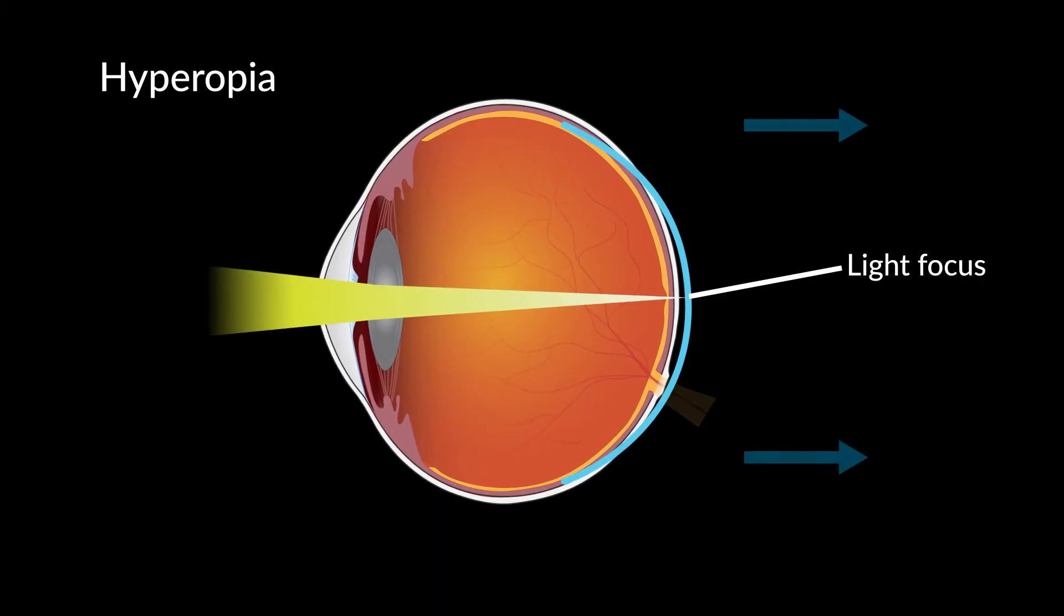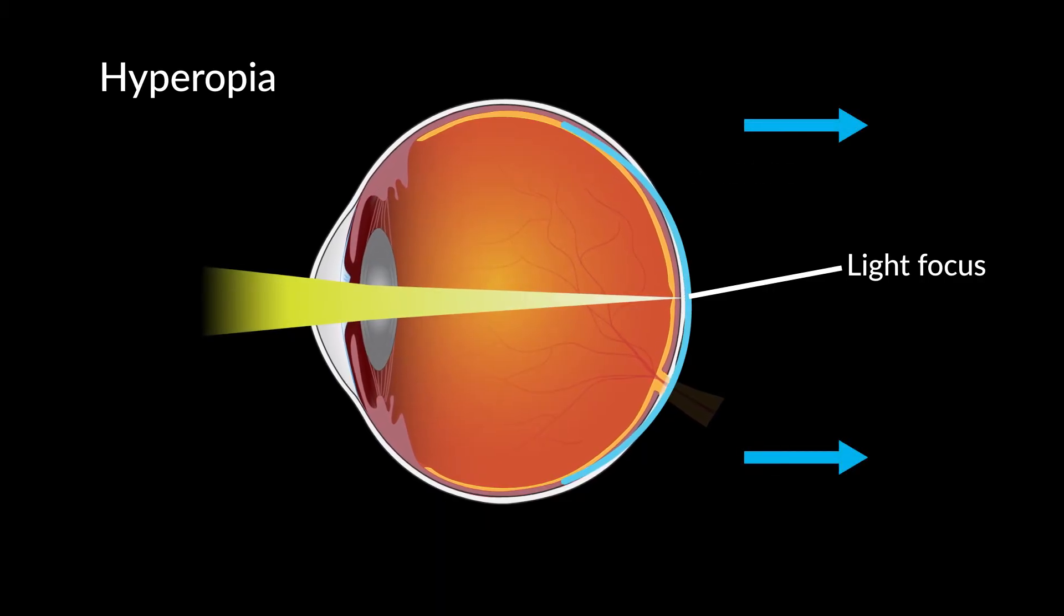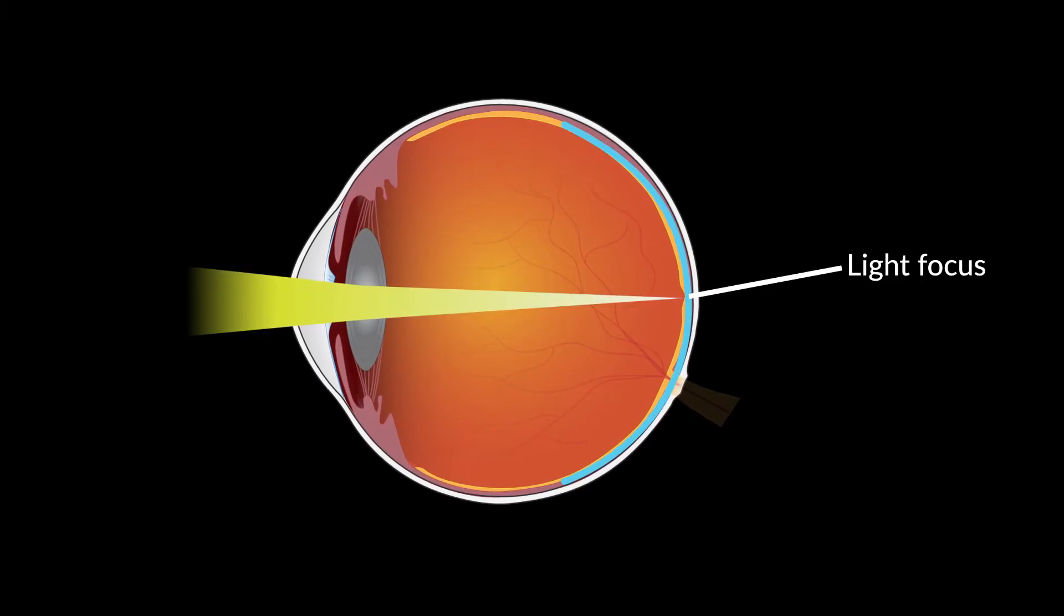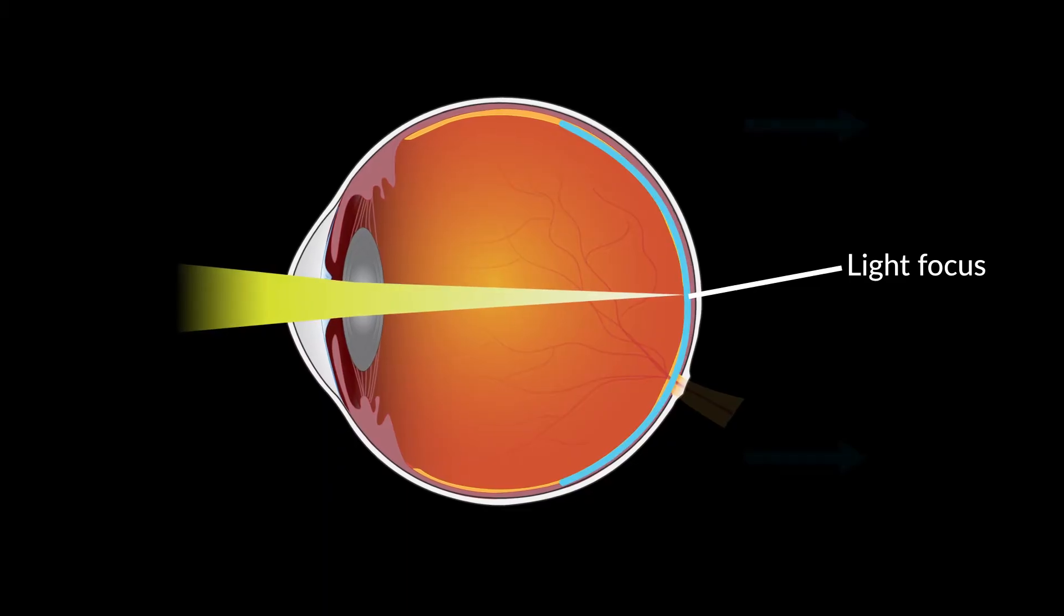By age four, most children's eyes naturally start to elongate, correcting the hyperopia. However, in some children, this eye growth either doesn't stop or it restarts, leading to myopia.